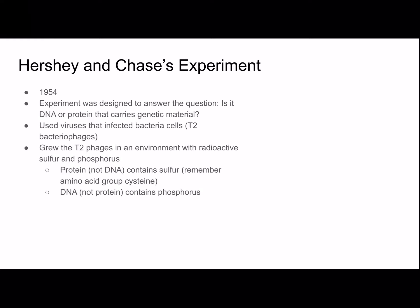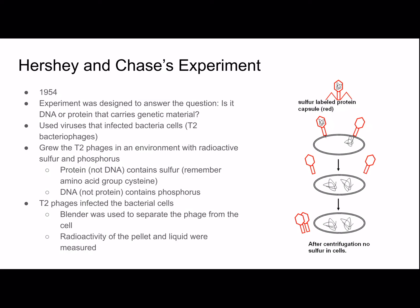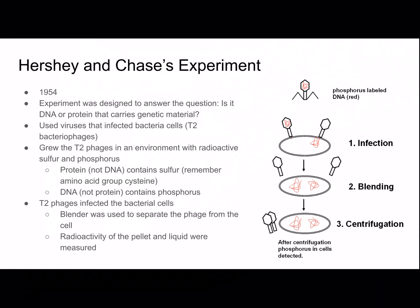That's why labeling with radioactive sulfur and phosphorus was important — you can track DNA and protein separately. The T2 phages infected the bacterial cells, a blender was used to separate the phage from the cell, and radioactivity of the pellet and liquid were measured. With radioactive sulfur, there was no radioactive sulfur found inside the cells — meaning no proteins were injected. But with phosphorus, they did measure it inside the cell, meaning the virus was injecting DNA. This showed that DNA is definitively the heritable material.